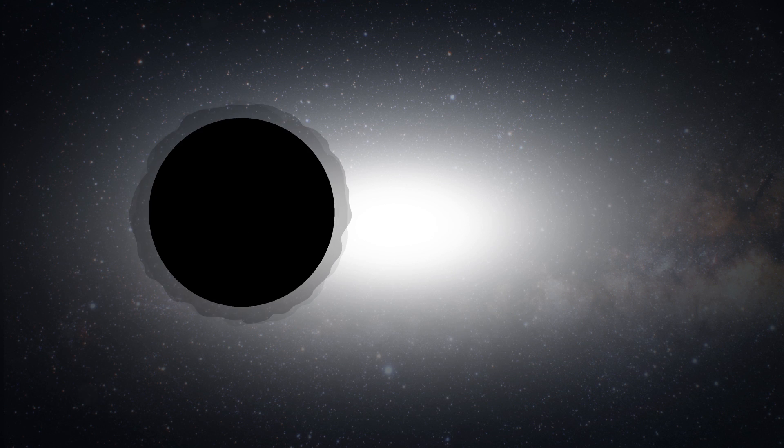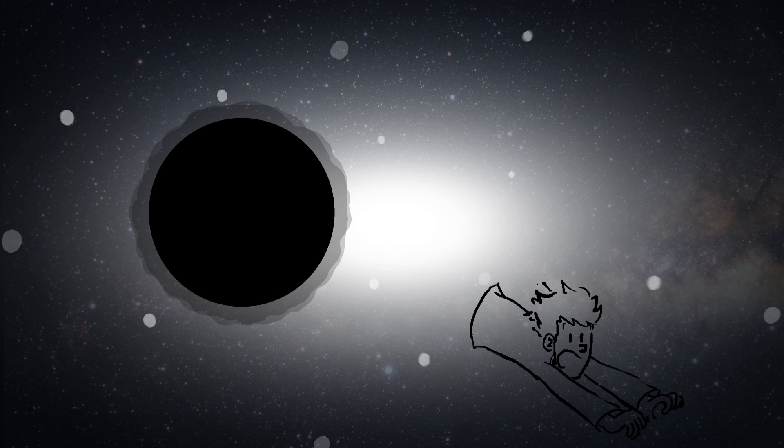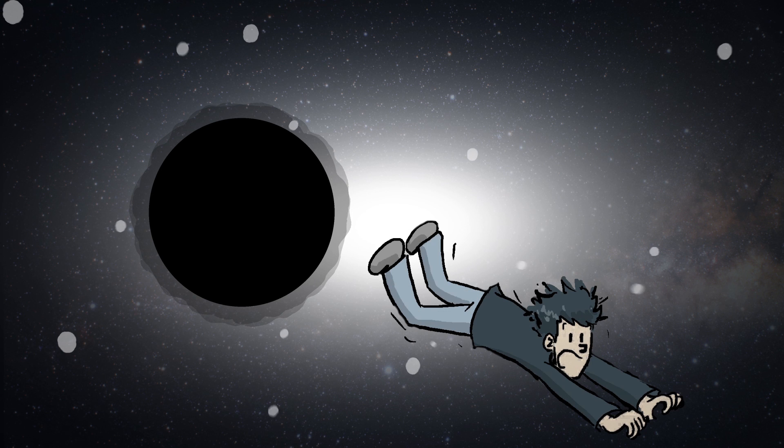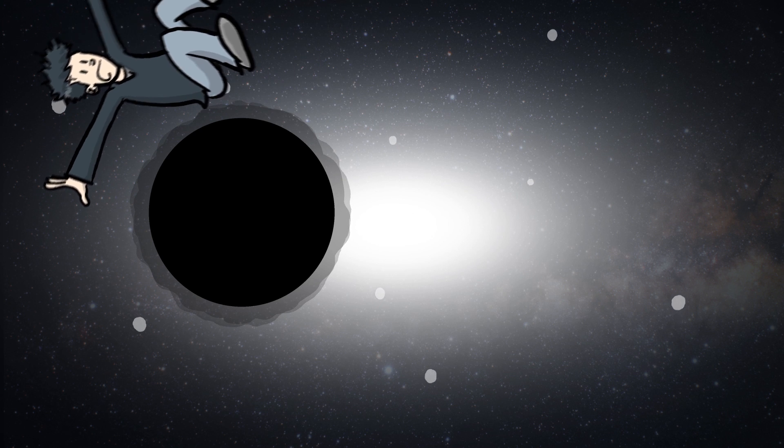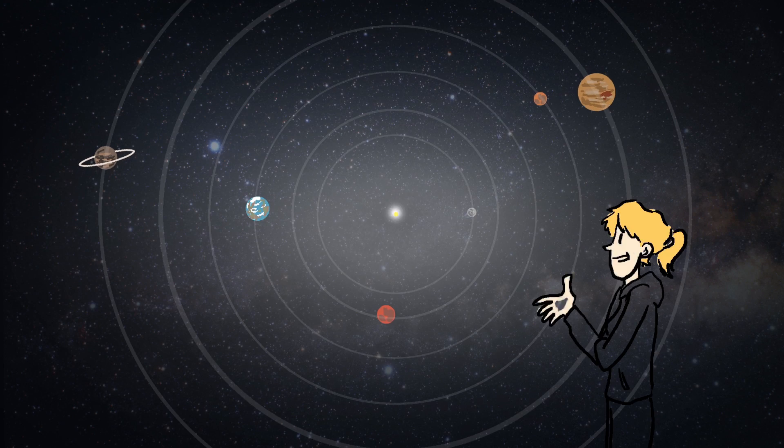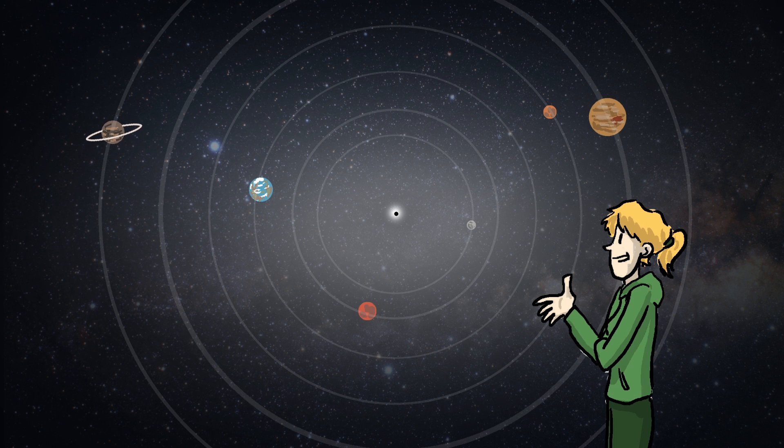These supermassive black holes, they don't suck in material. That's a very common misconception. If you see a black hole, you're not just going to be sucked straight into it, you are going to orbit around it just like it's a point mass. So for example, if our sun were to become a black hole, we would keep going around it.